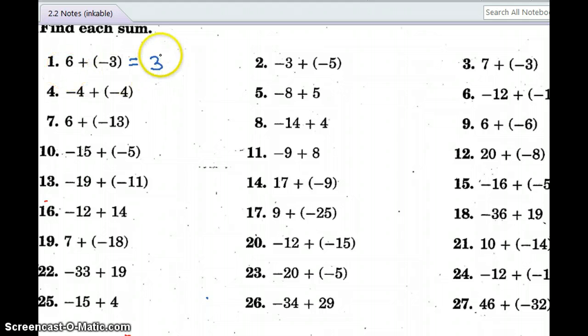And I keep the sign of the six. So it's positive three. Here I have negative four plus a negative four. So they're the same sign. So I add them. Four plus four is eight. But I keep the negative sign because it was the same sign.